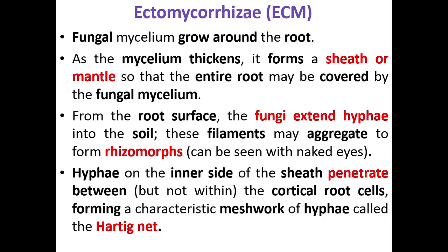Now let's talk about ectomycorrhizae. As mentioned in the last section, it is externally present, growing on the outer part of the cell. As the mycelia keeps growing, they form a sheet or mantle that covers the entire root — those white threads shown in the first slide are the external coating of that root.